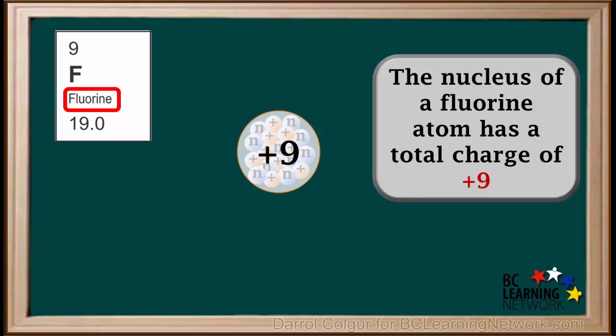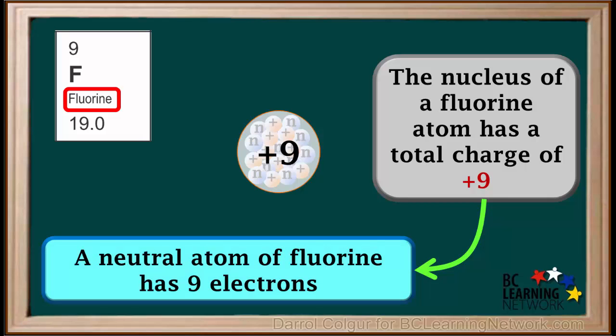Electrons have a negative charge, so a neutral atom of fluorine must have 9 electrons to balance the positive 9 charge on the nucleus.